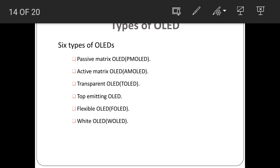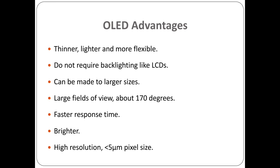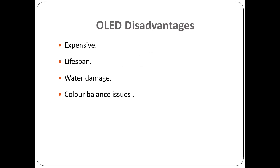The sixth type is white OLED, which emits white light and is the most efficient among all types, and can also be used for domestic lighting. Moving to advantages: OLED is thinner, lighter, and more flexible; does not require a backlight like LCD; can be made to large size; has a large field of view of about 170 degrees; faster response time; brighter; and high resolution.